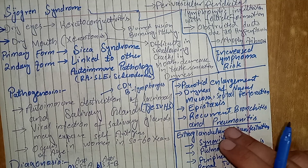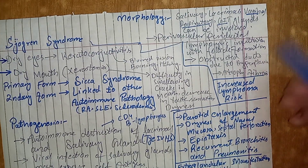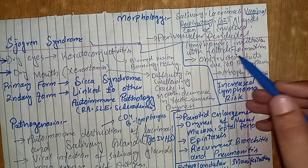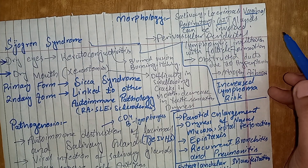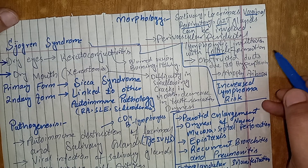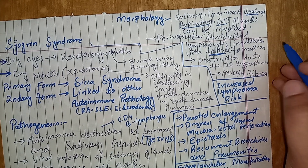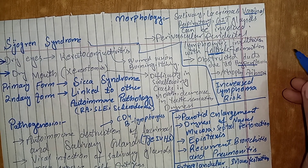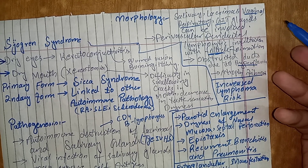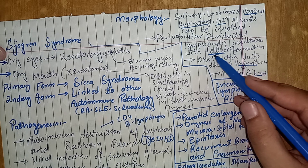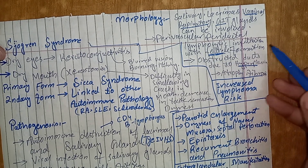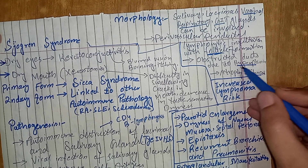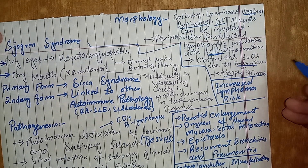Regarding morphology, the salivary glands or lacrimal glands being attacked will be infiltrated by CD4 lymphocytes, and there will be growth of B lymphocytes. Lymphocytic infiltration can lead to the formation of follicles with germinal centers. The ducts of the glands will undergo epithelial hyperplasia, causing the ducts to be blocked, followed by atrophy and fibrosis of the glands.